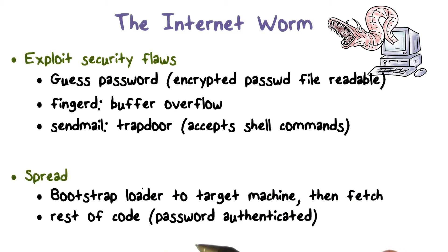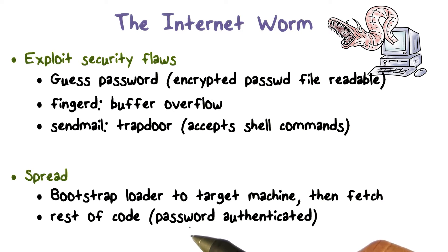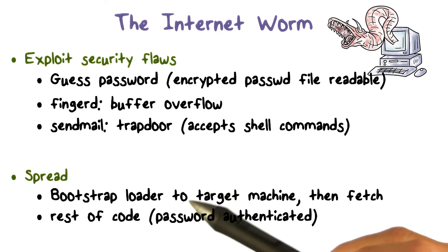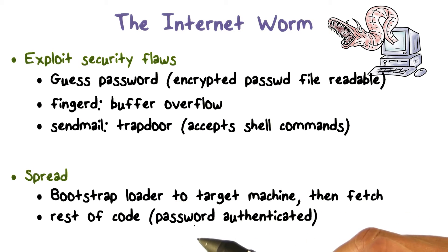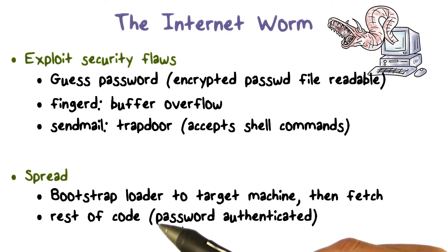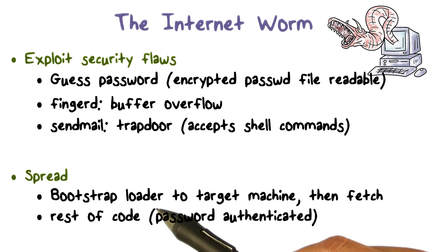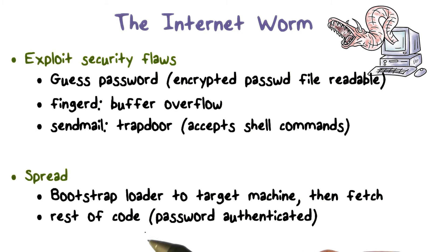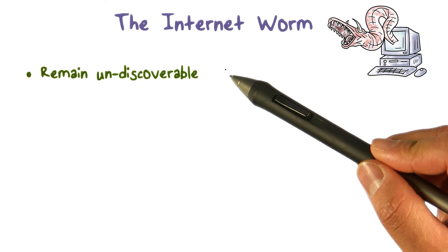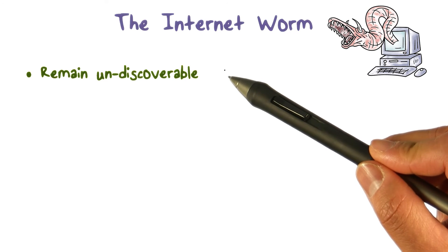When these security flaws were exploited, the internet worm could gain access to a target system. It would then load a small piece of code called the bootstrap loader onto the target machine, and this loader would then fetch the rest of the worm code. It even used password-based authentication to make sure that only the bootstrap loader of the worm could load the rest of the worm code.